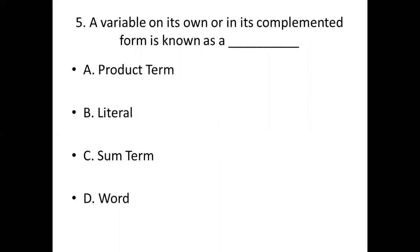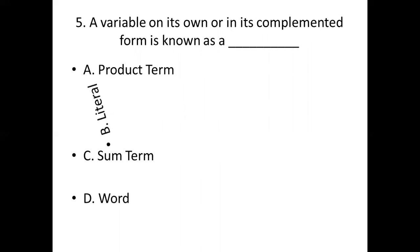Fifth bit. A variable on its own or in its complemented form is known as dash. Option A: product term. Option B: literal. Option C: sum term. Option D: word. Answer: Option B, literal.